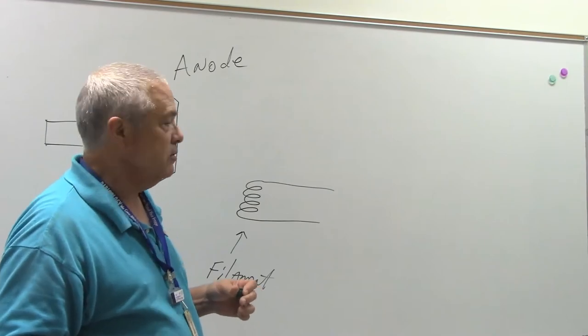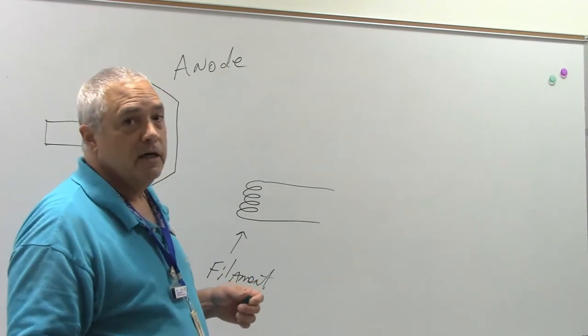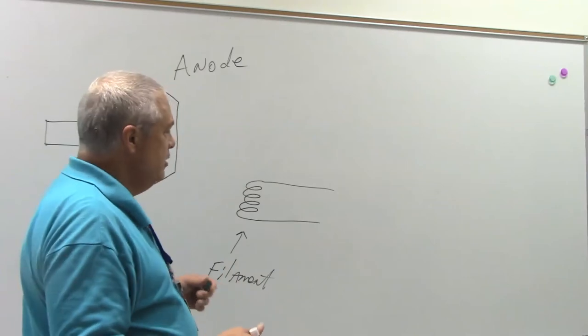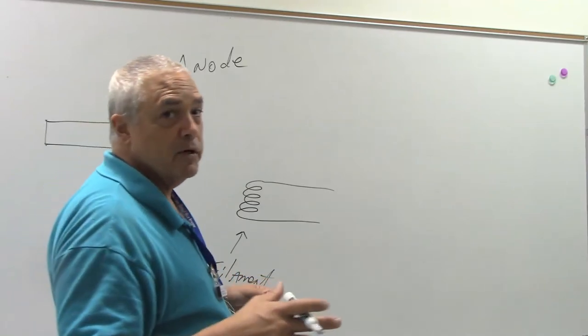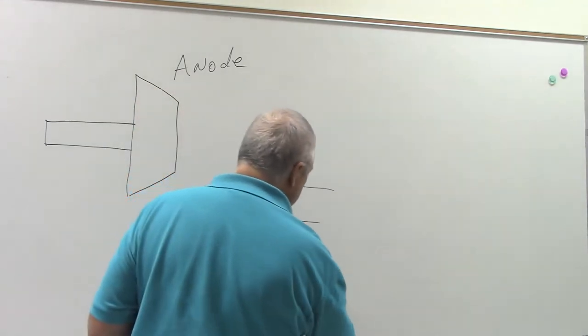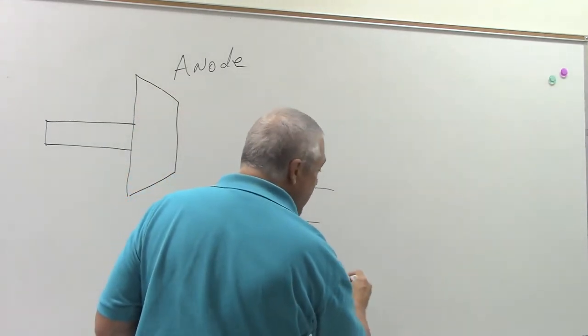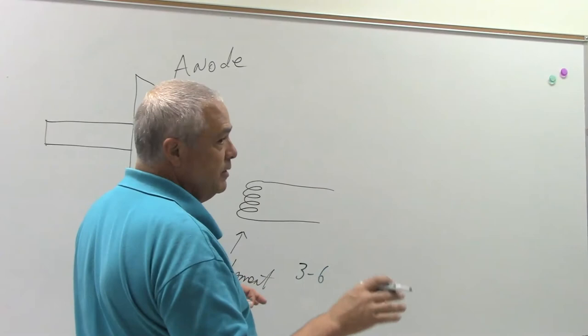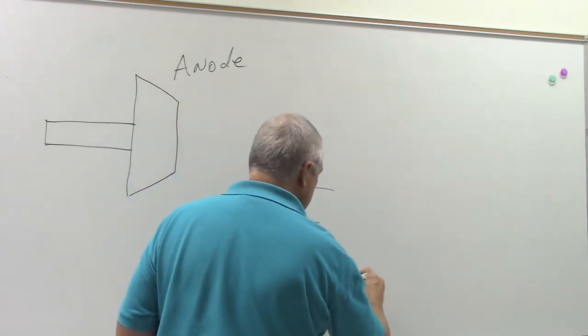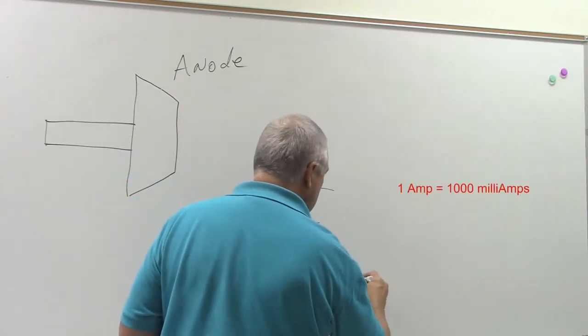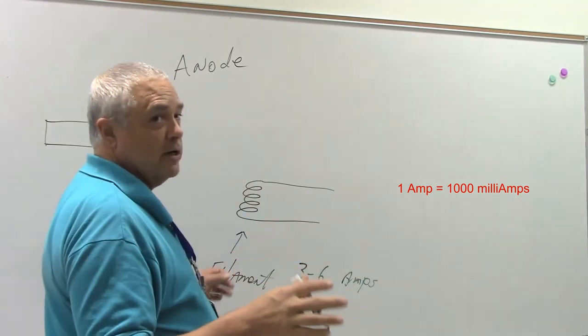But it's going to increase my amperage to around 3 to 6 amps. So, my filament current is 3 to 6 amps, not milliamps. You'll need to know this for the registry, by the way.